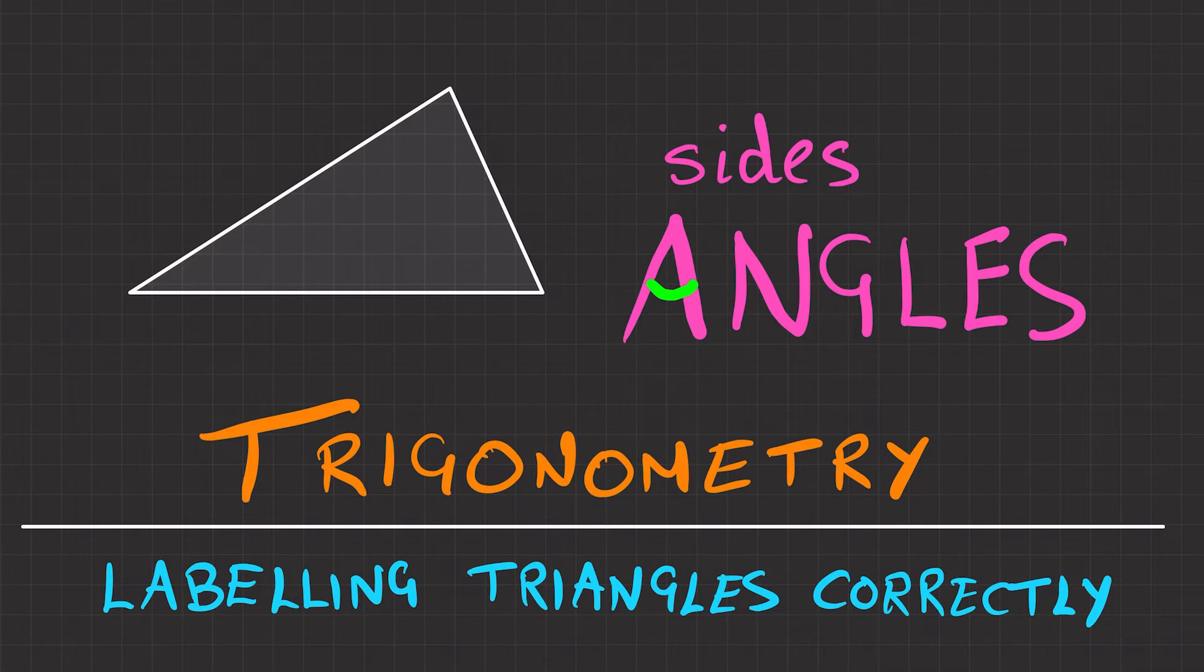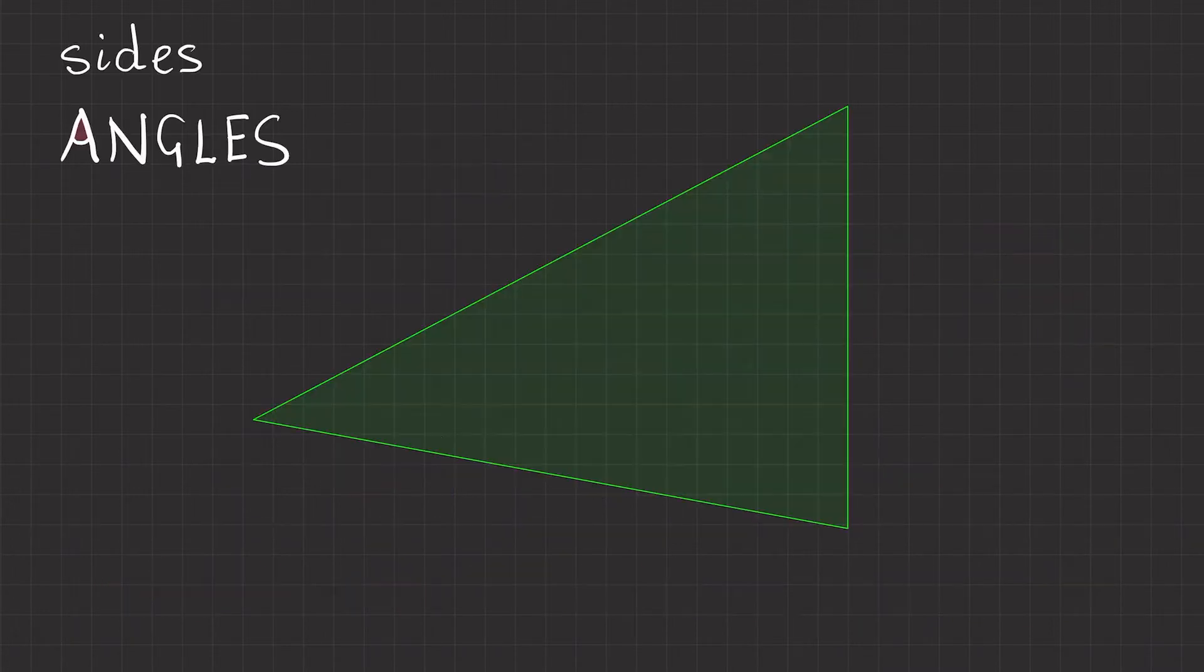And if you can't remember which one's which, just remember this little A here, it looks a bit like an angle. So each angle has its corresponding side. So we've got firstly, if we use this angle here as angle A, then its corresponding side is opposite it.